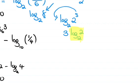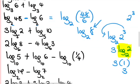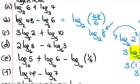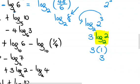Remember: you cannot take the log of a number whose base is equal to that number without getting 1. So log base 2 of 2 equals 1, and 1 times 3 gives 3. So log base 2 of 48 minus log base 2 of 6 gives us 3.